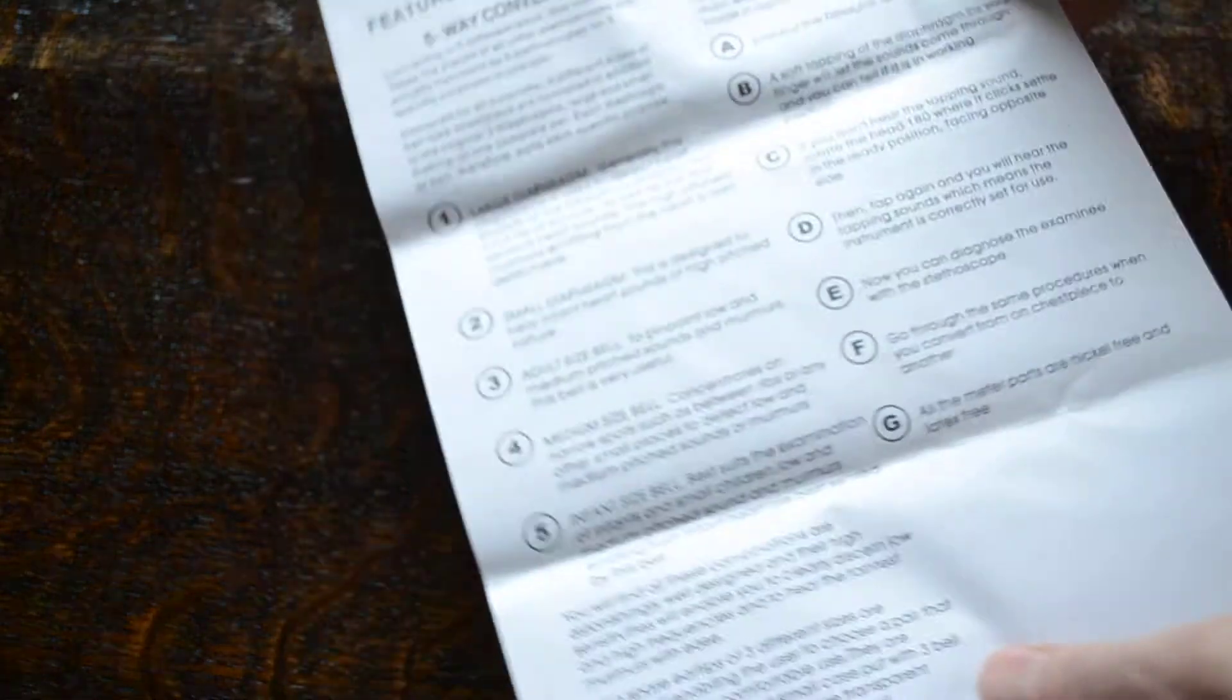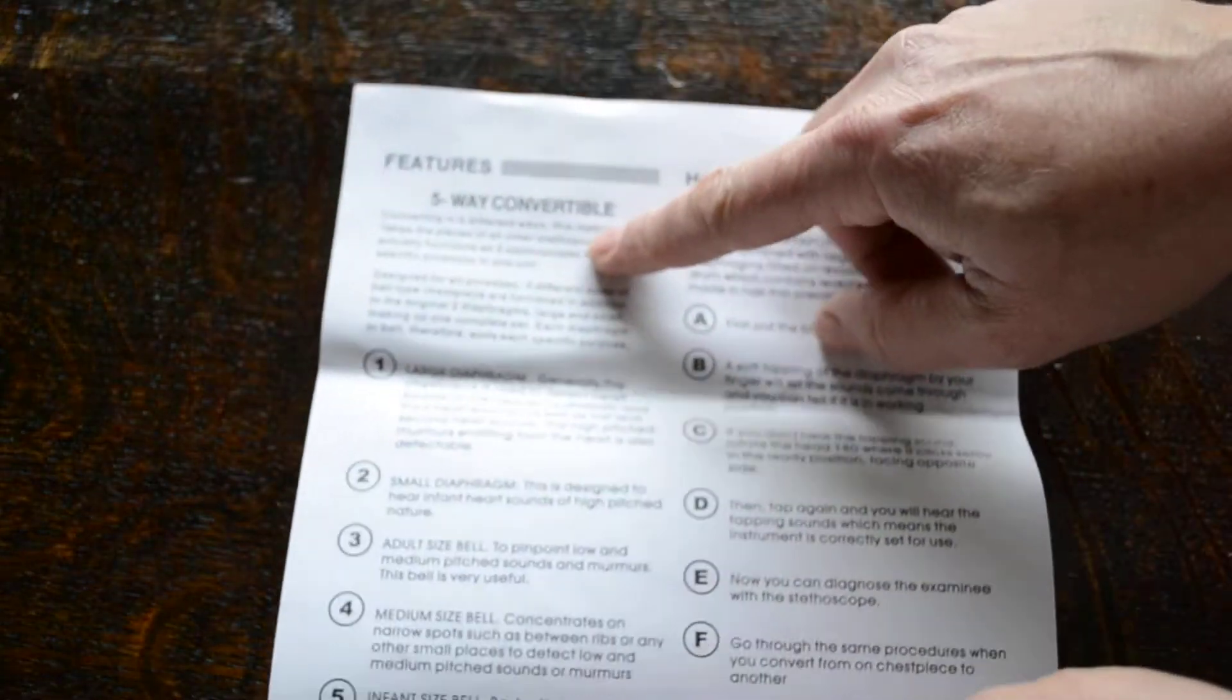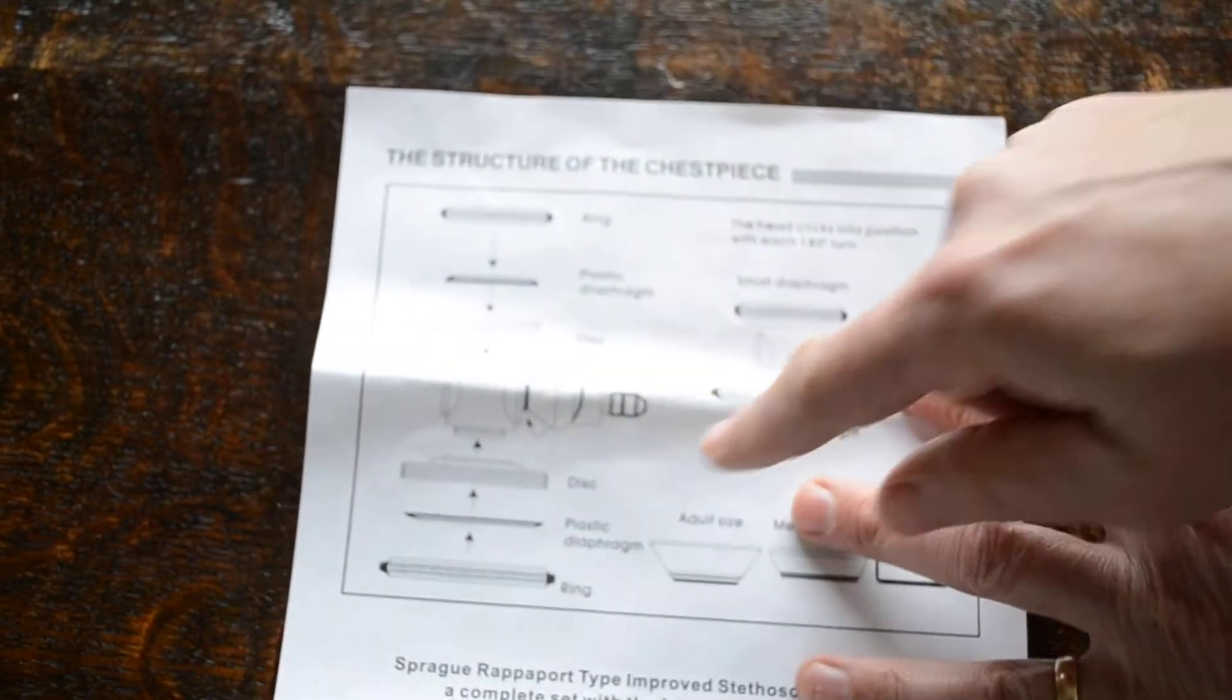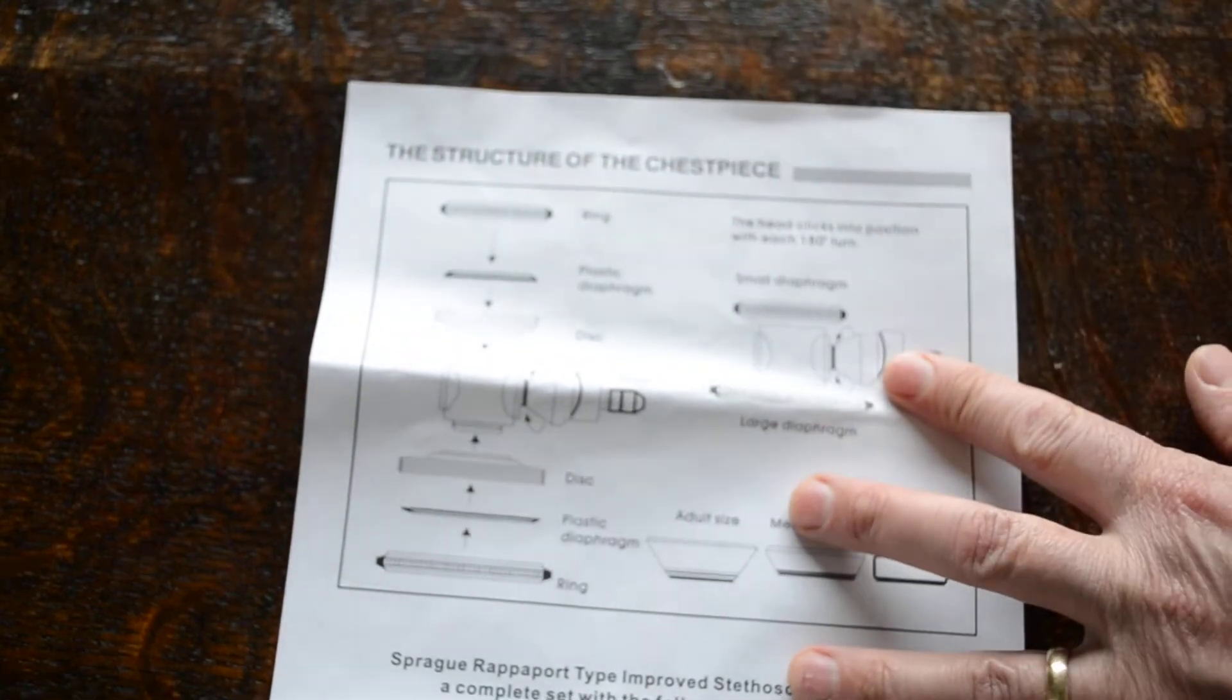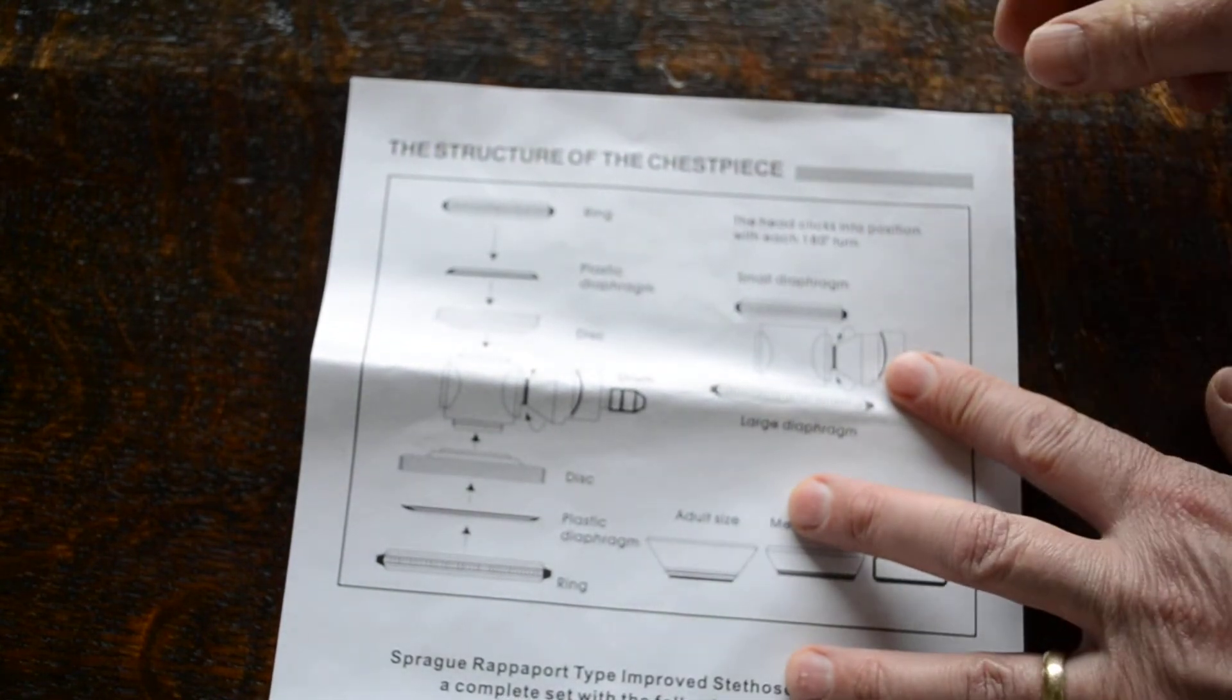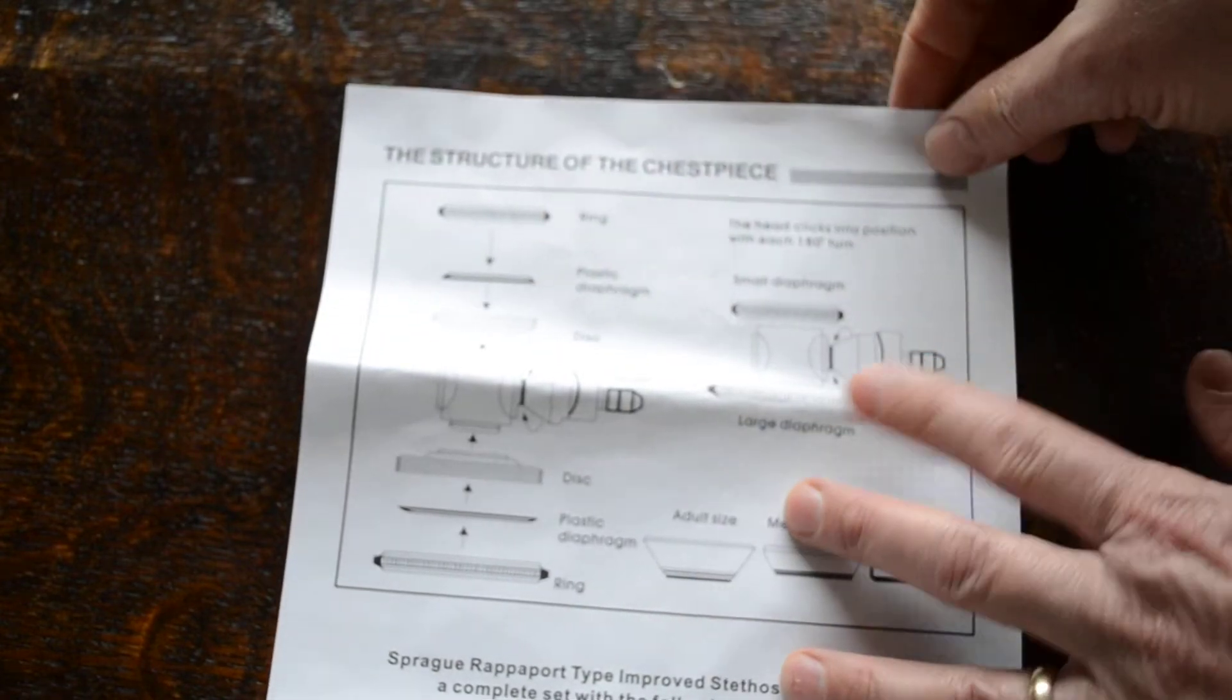Standard pack insert in terms of how to use and the features. It's five-way convertible. The back gives you basic fitting instructions. It's useful to keep these so you know how to rebuild the unit if you're putting diaphragms in, where they go in relation to the discs and the rings.